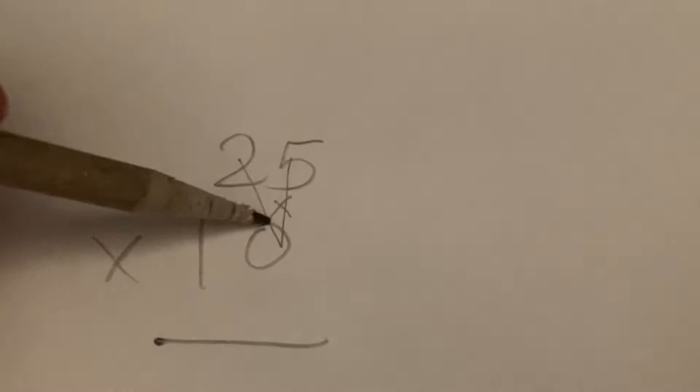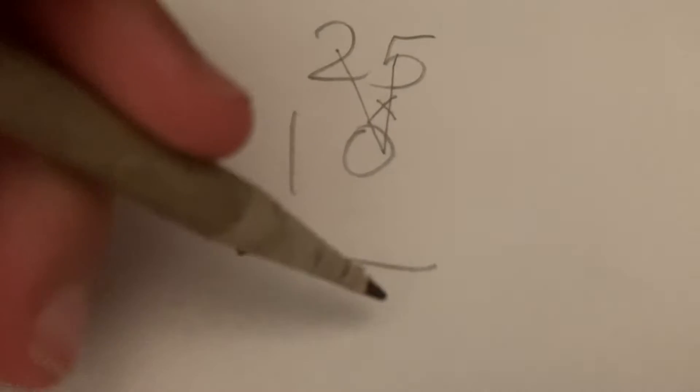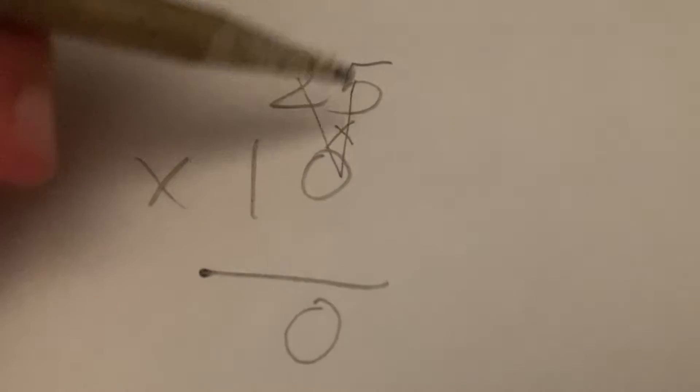First, 5 times 0, 0. 2 times 0, also 0. So put a 0 below this 0.